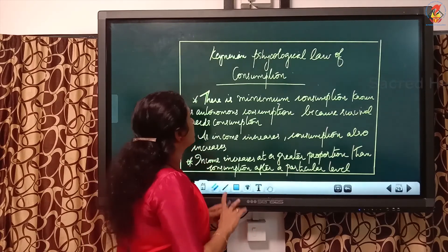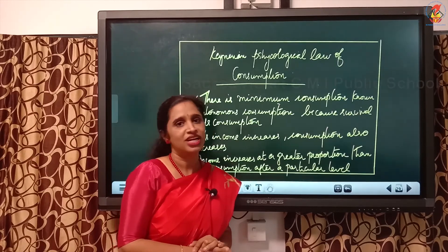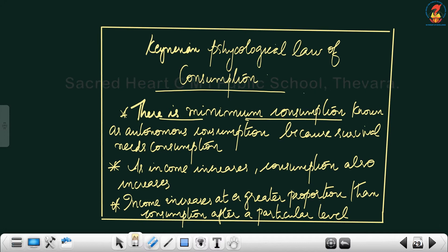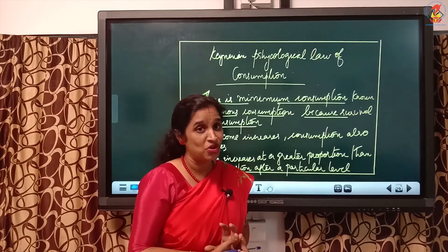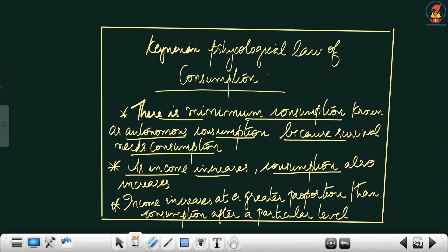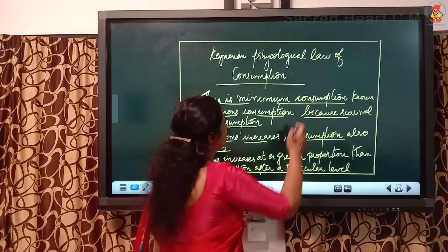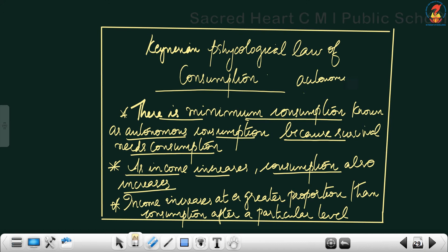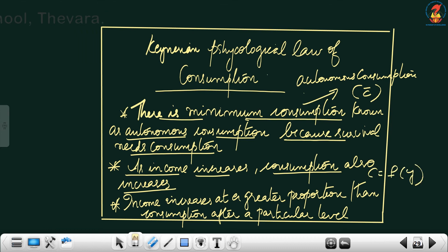Now the final statement of the Keynesian psychological law of consumption. Point one: there is a minimum consumption known as autonomous consumption because survival needs consumption — even at zero level of income there is a minimum level of consumption for people to survive, represented by C-bar. Point two: as income increases, consumption also increases — C is the f of Y.